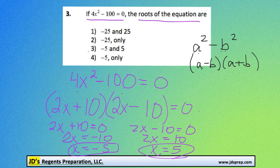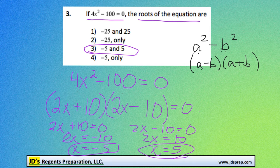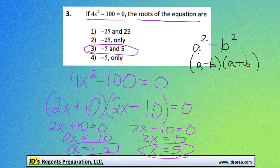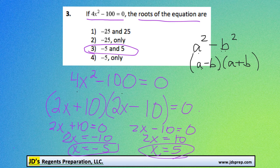So in the end, negative 5 and 5 are the roots that we're looking for. That's all for this video. Thanks for visiting JD's Regents Preparation.